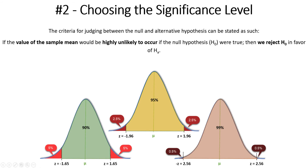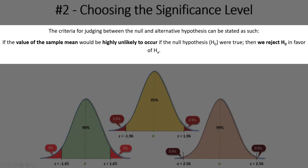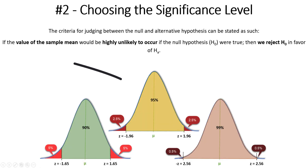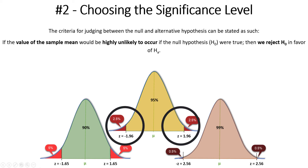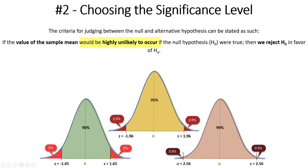Step two: choosing the significance level. This is really important to hypothesis testing — it establishes the criteria that allows you to pick between the null and the alternative hypothesis. Here's a key statement: if the value of the sample mean would be highly unlikely to occur assuming the null hypothesis was true, then we can reject the null hypothesis in favor of the alternative. If we assume the null hypothesis is true and a sample mean falls way out in the tails of the distribution, that would be highly unlikely to occur — and if it's highly unlikely, we have enough evidence to reject the null in favor of the alternative. Choosing the significance level establishes the rejection region and creates the criteria for what a 'highly unlikely to occur' value means.